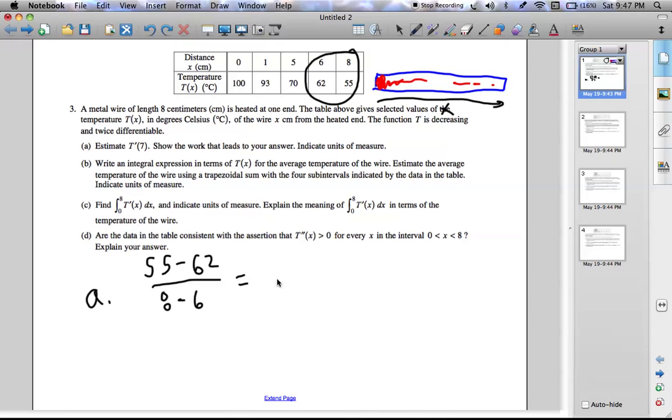And this comes out to equal negative 3.5 degrees Celsius per centimeter at 7 centimeters. Sorry, not time 7, but 7 centimeters.